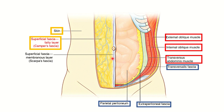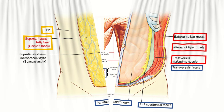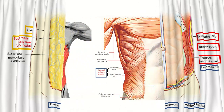To summarize, the layers of the anterior abdominal wall are: skin and superficial fascia, then the three important muscles, and then three important deeper structures.